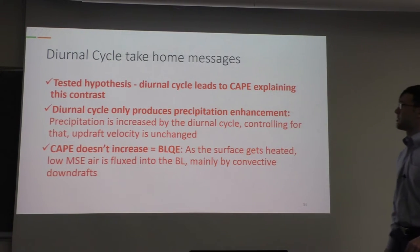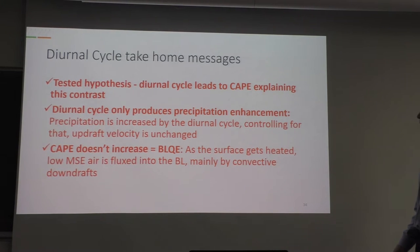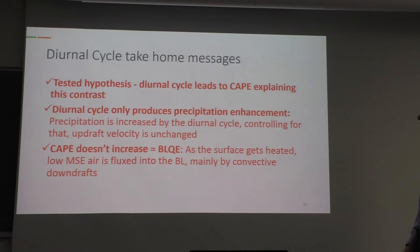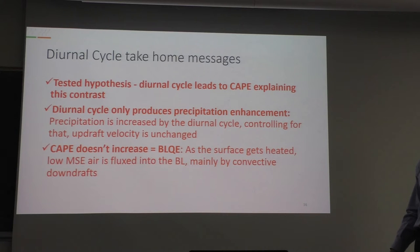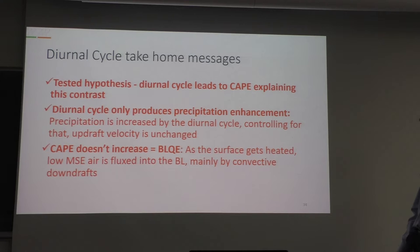Final diurnal cycle take-home messages: we tested the hypothesis that the diurnal cycle over land leads to CAPE explaining the land-ocean contrast in convective intensity. The diurnal cycle only produces precipitation enhancement — precipitation increases over our islands, but when we control for that, updraft velocities are unchanged. CAPE is not increasing due to boundary layer quasi-equilibrium: as the surface gets heated, low-moist-static-energy air associated with convection is flushed into the boundary layer, keeping moist static energy steady.